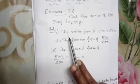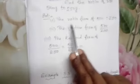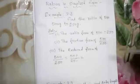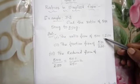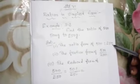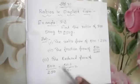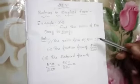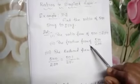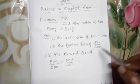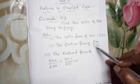First, write the ratio form: 500 is to 250. Second, write the fractional form. The numerator is the first quantity and the denominator is the second quantity, so 500 divided by 250.